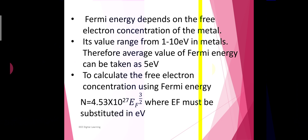To calculate the free electron concentration using Fermi energy, from the above equation the free electron concentration N = 4.53 × 10²⁷ × Ef^(3/2), where Ef must always be substituted in eV.